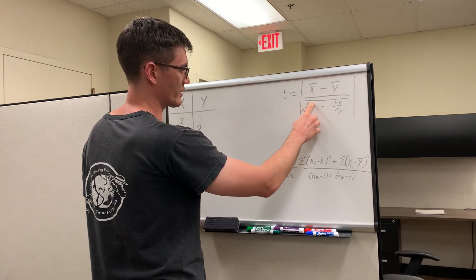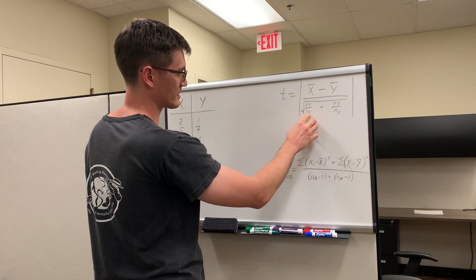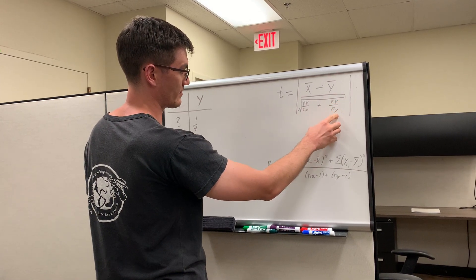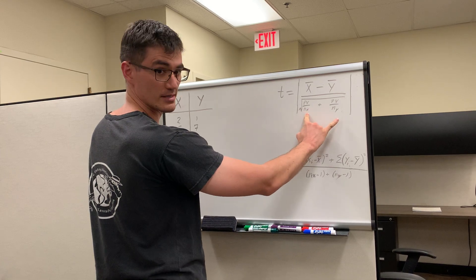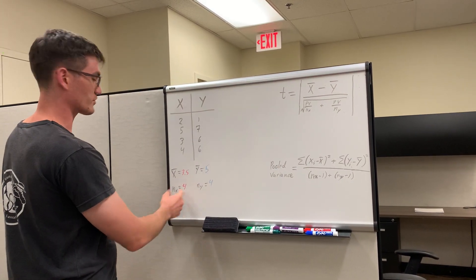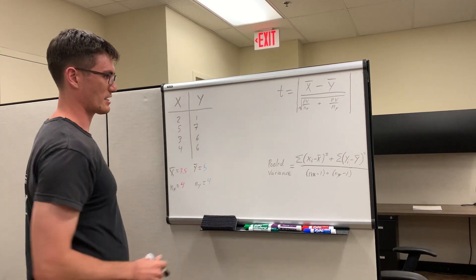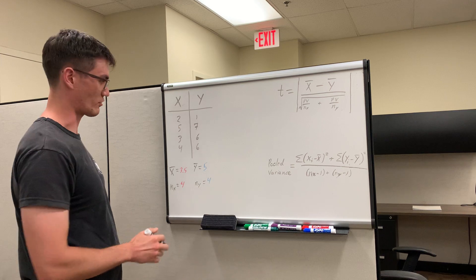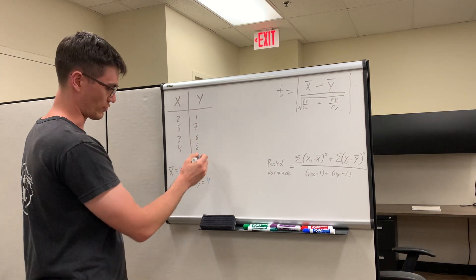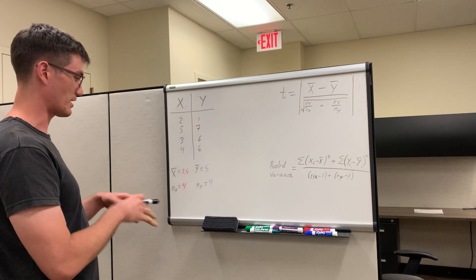The denominator is where things get a little bit more complicated. This is the square root of pooled variance, which is in its own formula down here, divided by n sub x plus pooled variance, again, divided by n sub y. What are n sub x and n sub y? n sub x is just the sample size of treatment x: 1, 2, 3, 4. Same thing with n sub y. It's the sample size of treatment y: 1, 2, 3, 4 data points. Okay, so n sub x and n sub y, in this case, are the same. They don't have to be.